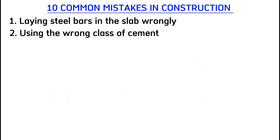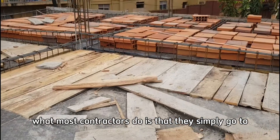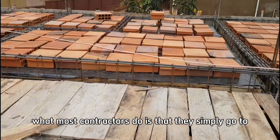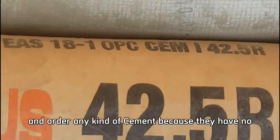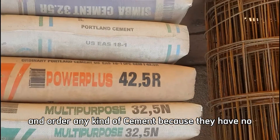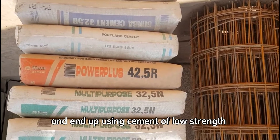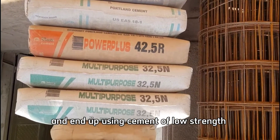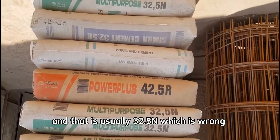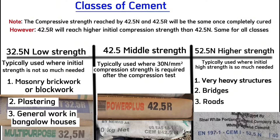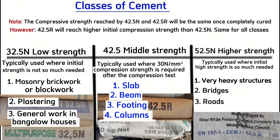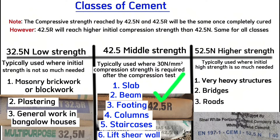Common mistake number two is using the wrong class of cement when casting concrete for the slab. Most contractors simply go to any hardware store and order any kind of cement, having no idea about cement classes, and end up using cement of low strength — usually 32.5 — which is wrong. Therefore, when casting concrete for the slab, the beam, footings, columns, staircases, or lift shear wall, be sure to always use cement of 42.5 normal strength or rapid strength.